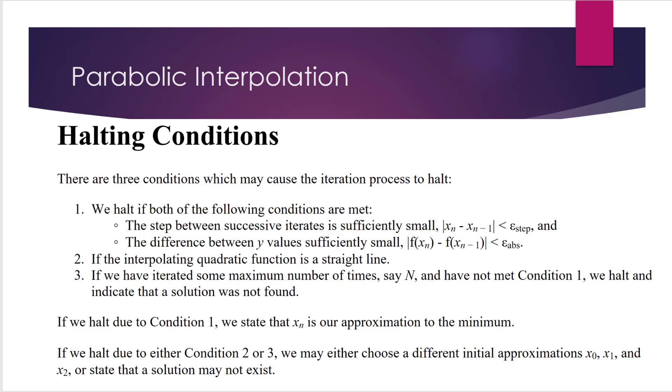If we halt due to condition one, we state that we find the optimum and x_n is our approximation to the minimum. If we halt due to either condition two or condition three, we didn't find a solution. So we need to either choose different initial approximations x_0, x_1, x_2, or state that a solution may not exist.